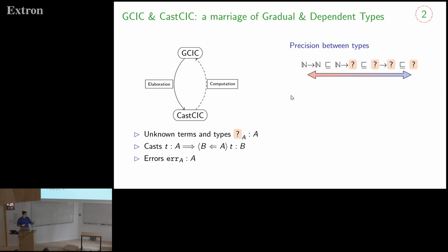So how do we specify this cast? Well, there is, in the literature on gradual types, a notion of precision that allows to go from static types, types which are in the underlying base type theory, in our case the calculus of inductive constructions, to the unknown type. And the idea is that we are losing precision as we go towards unknown.